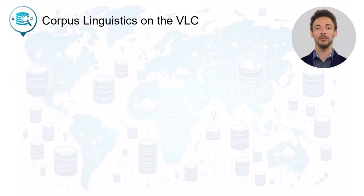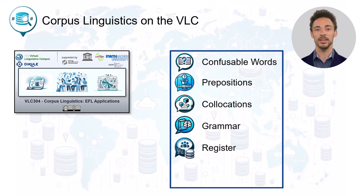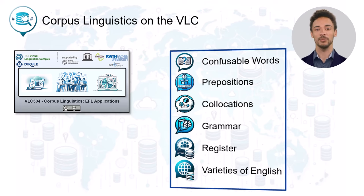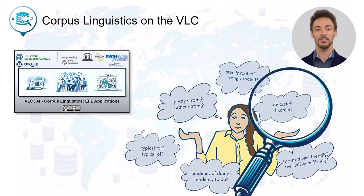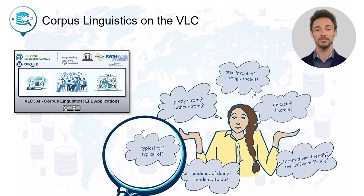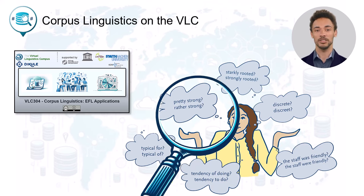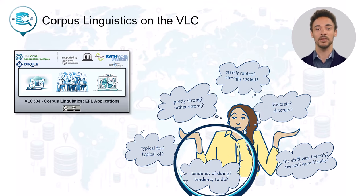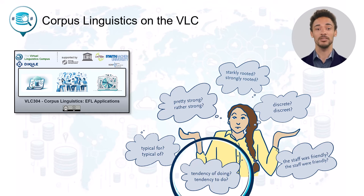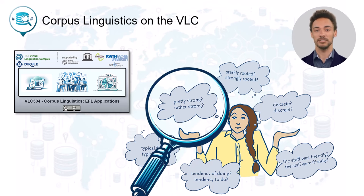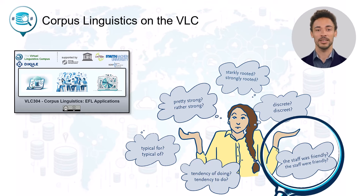VLC 304 has six central units and gives you lots of training with various practical language issues in English. You will cover EFL problem areas like confusable words, the choice of prepositions, the use of collocations, grammar problems, formal and less formal language, and differences between British and American English.